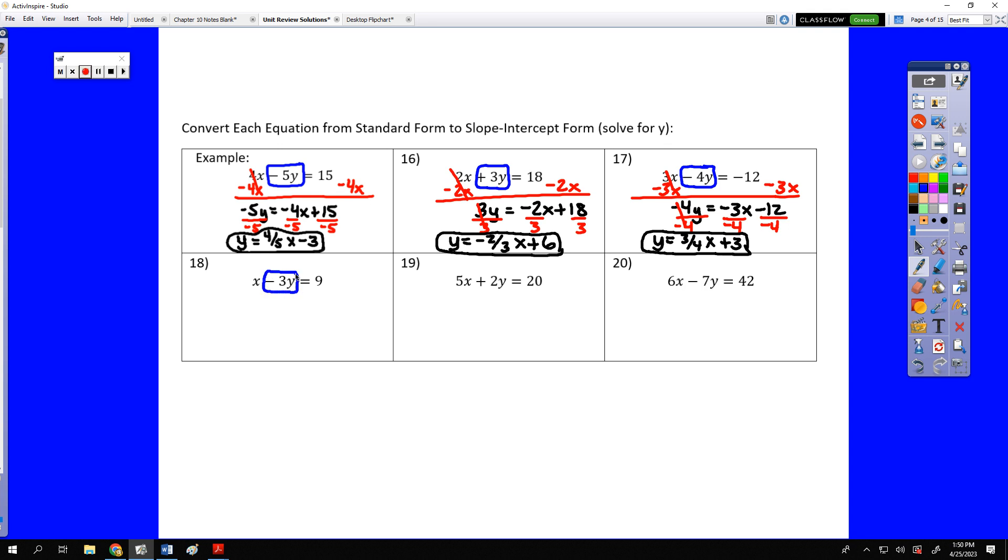On to the next one. We need to get that y by itself. Now this one could be a little bit tricky if we do not realize that x is in fact positive 1x, which means we need to subtract 1x from each side of the equation. That would give us negative 3y equals negative 1x plus 9.